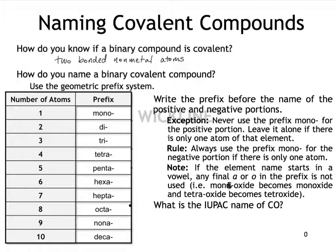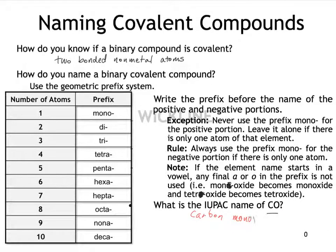Another example: if you had tetraoxide, you would drop the final A, so it becomes tetroxide instead of tetraoxide. Now let's try the IUPAC name for CO. There are many mistakes you might make — monocarbon monooxide, monocarbon monoxide — but the correct name is carbon monoxide: we do not use the prefix mono for the first element, but we do use monoxide for the second.